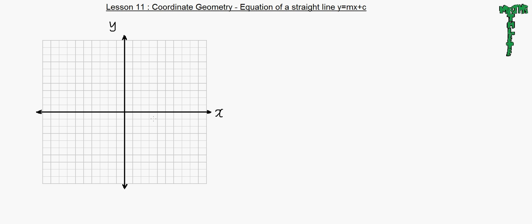Hello, welcome. This is MathsAthlete. Today we'll be continuing the topic of coordinate geometry and today's lesson is the equation of a straight line where the equation is y equals mx plus c.